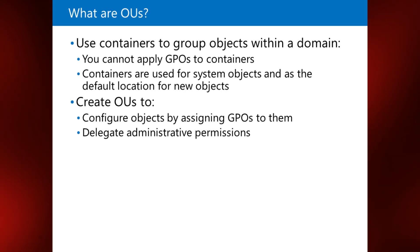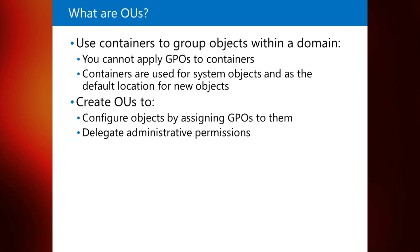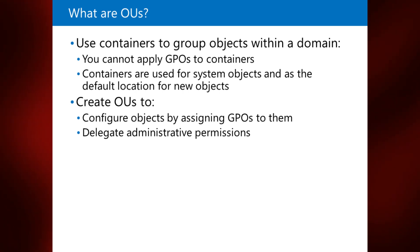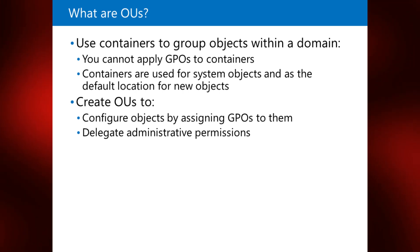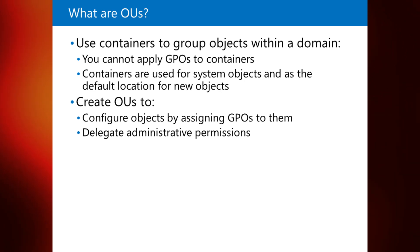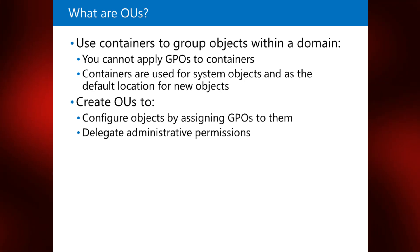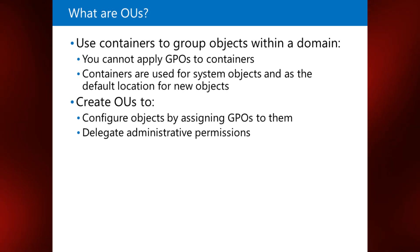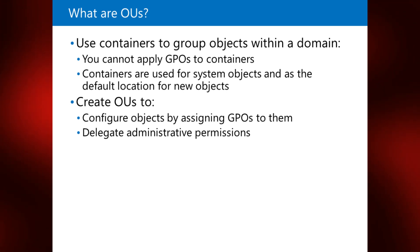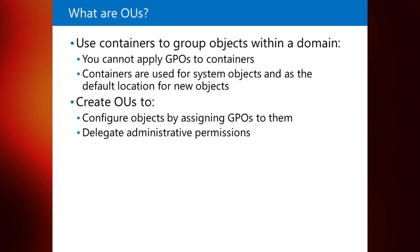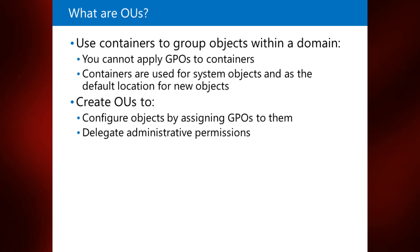Although there is no limit to the number of levels in your OU structure, limit your OU structure to a depth of no more than 10 levels to ensure manageability. Most organizations use five levels or fewer to simplify administration. Note that applications working with ADDS can impose restrictions on the OU depth within the hierarchy for the parts of the hierarchy that they use.